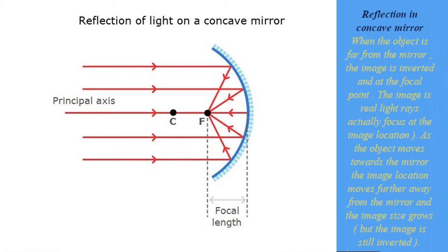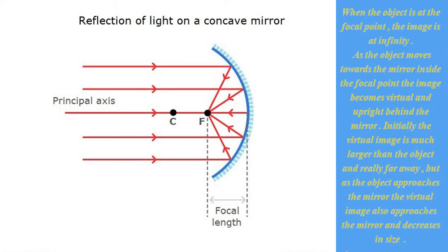Reflection in concave mirror. When the object is far from the mirror, the image is inverted and at the focal point. The image is real, light rays actually focus at the image location. As the object moves towards the mirror the image location moves further away from the mirror and the image size grows, but the image is still inverted. When the object is at the focal point, the image is at infinity. As the object moves towards the mirror inside the focal point the image becomes virtual and upright behind the mirror. Initially the virtual image is much larger than the object and really far away, but as the object approaches the mirror the virtual image also approaches the mirror and decreases in size.